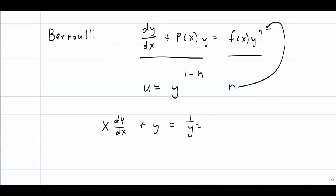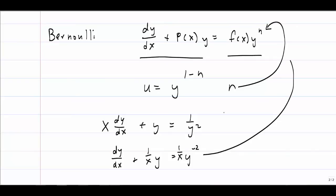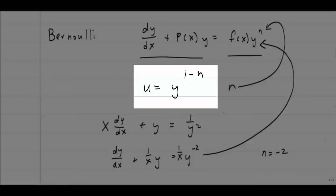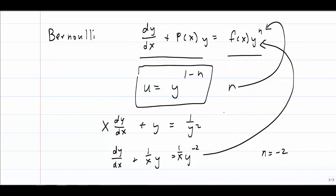Let's do one problem. We'll have to do what we did for linear equations and separation of variables: get it in the correct form by dividing out the x. When I divide out the x, I get dy/dx plus (1/x)y equals (1/x) times y to the negative 2 power. I've written the right-hand side in terms of an exponent just like in our model equation, so now I know that n is equal to negative 2.